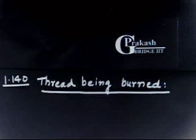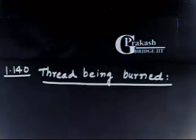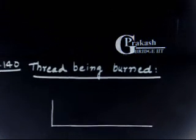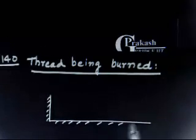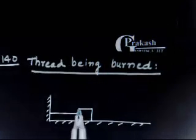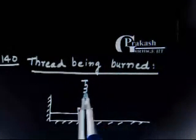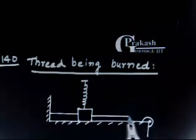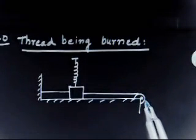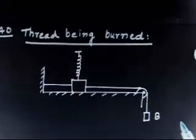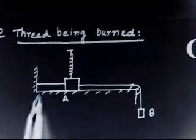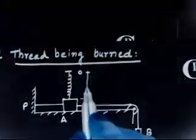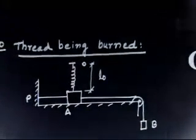Let us discuss problem 1.140. So let me first draw the diagram for this problem, then we will discuss. We have a horizontal surface, and this mass A is here. There is a spring attached, and there is a pulley over this mass. The pulley is connected through a cord to mass B. This point is P, this point is O, and the natural length of the spring is L0. This distance from here to here is L0.